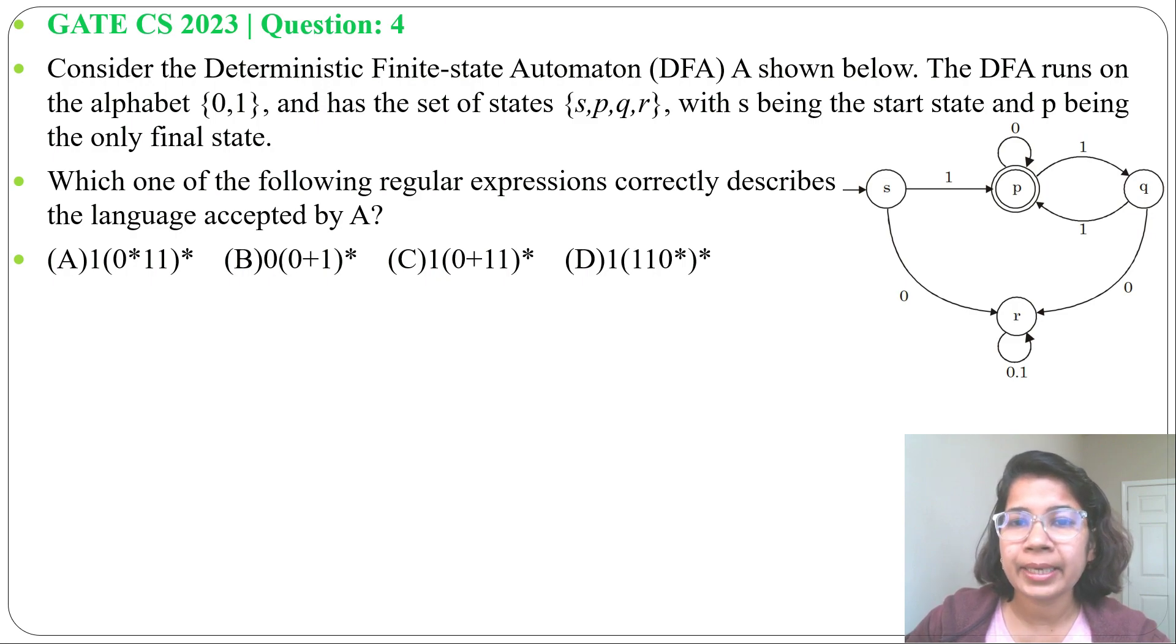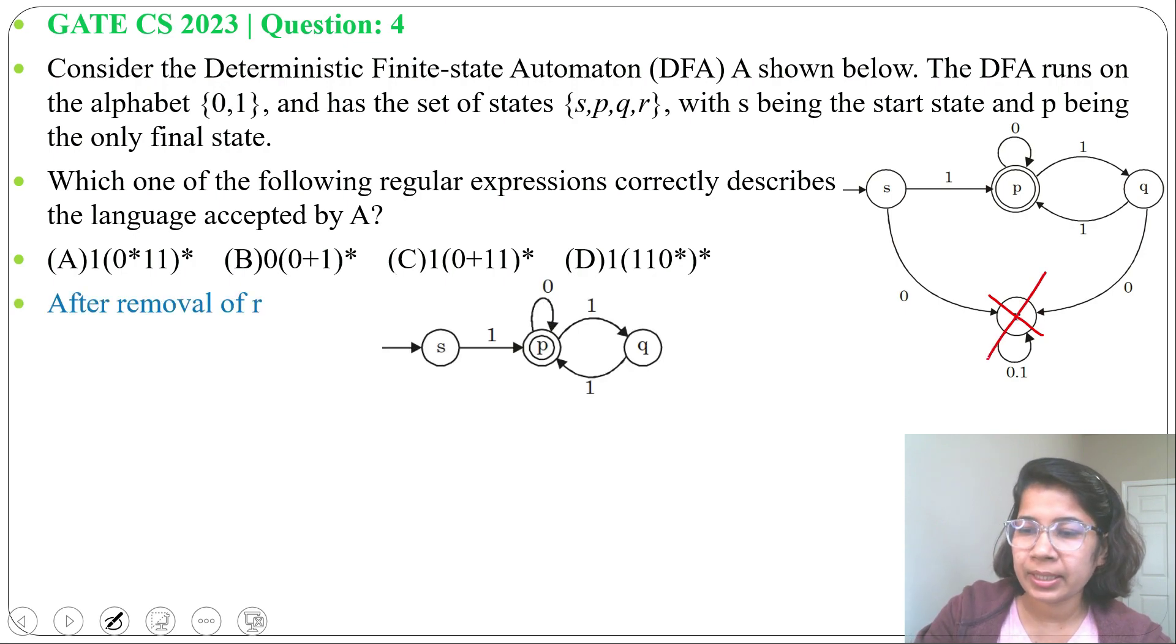First I will do by state elimination method where we'll remove one by one state. So first I'll remove state R. After removal of state R I'll get this. This is a dead state. So after removal of this it's not going to affect. Now it's an NFA.